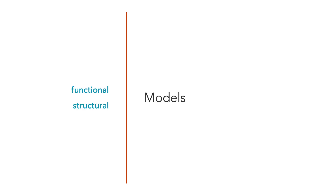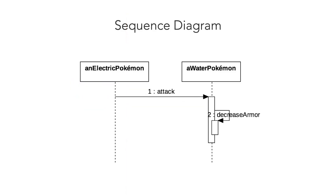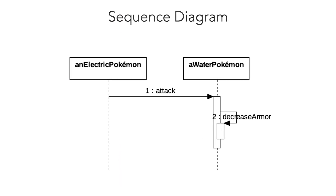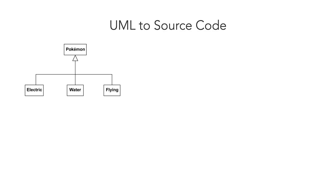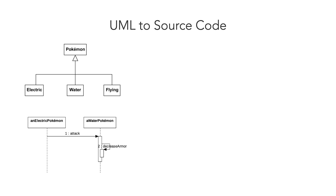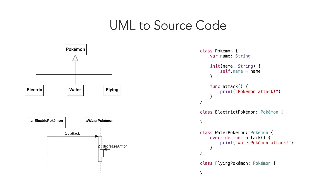UML lets us model dynamic behavior too. The behavioral diagrams describe the system's functionality, focusing on what happens and the interactions between objects. The best part about UML is that it's independent of any particular programming language. We can start coding an object-oriented software based on UML diagrams, and if those diagrams are detailed enough, they can be converted to source code. Now let's see some real-life examples using UML.